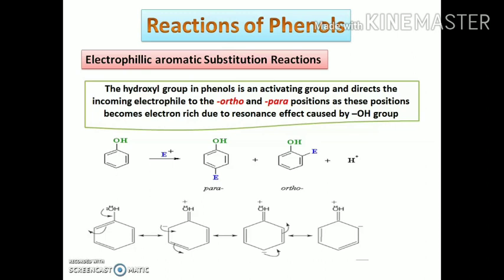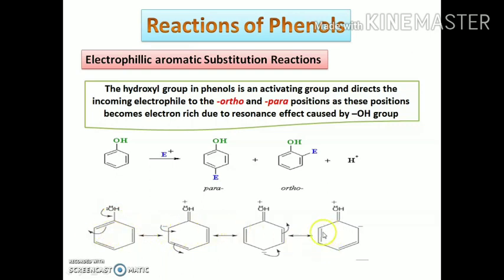Due to the resonance effect caused by the hydroxyl group, the ortho and para positions of the benzene ring become electron rich and the electrophile gets attached to those positions. The oxygen atom has two lone pairs of electrons which get shifted towards the benzene ring due to the +R effect, and are stabilized by resonance. Therefore the electrophile gets attacked only on the ortho and para positions.